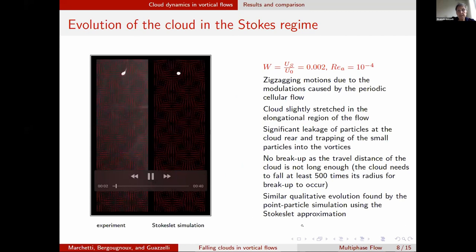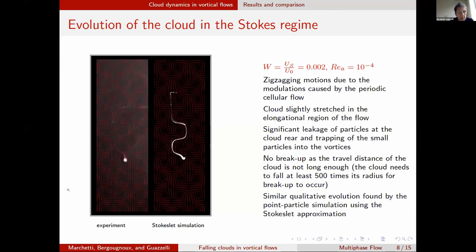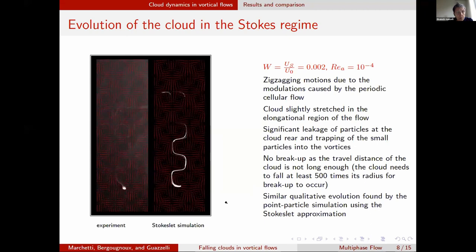Here in the Stokes regime, you can see the experiment and the simulation. You can see the zigzagging motion due to the modulation caused by the periodic cellular flow. The cloud is stretched in the elongation region of the flow — at the corners of the flow structure. There is no breakup because the travel distance of the cloud is not long enough. You can see some leakage, and there is good agreement between the point particle simulation using the Stokeslet approximation and the experiment.